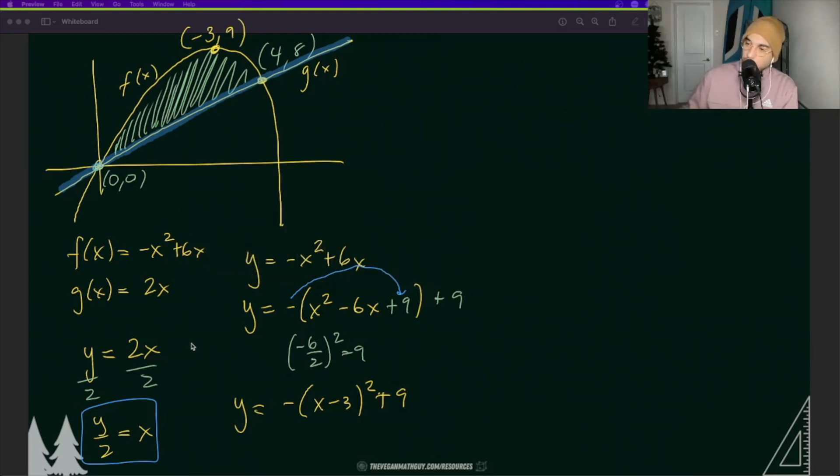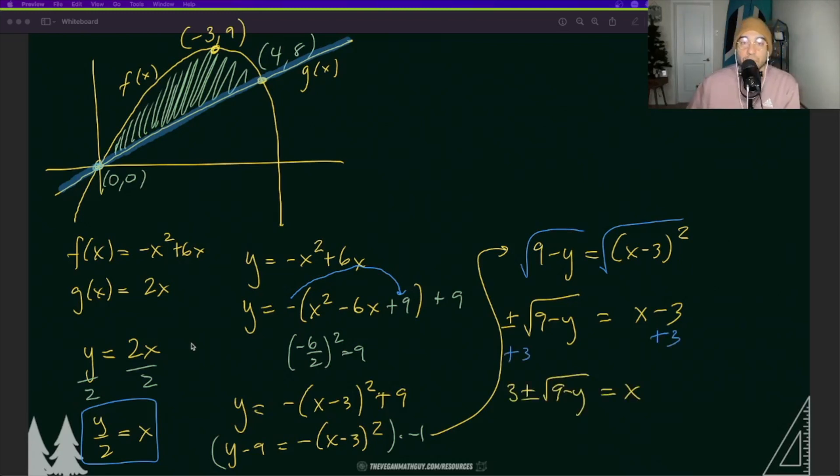So back to our problem we're going to go ahead and subtract the 9 to the other side. And I'm going to multiply everything by -1 to get rid of that negative sign that was on the right side. And so I have 9 - y = (x - 3)². Let's take the square root of both sides. Don't forget that you need to put that plus or minus. All right let's go ahead and add the 3. And this is our answer in terms of y.